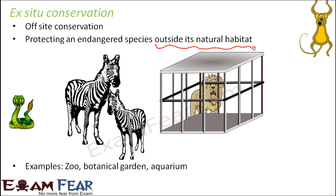This is off-site conservation. Botanical gardens are another example — like Lal Bagh in Bangalore, where you see huge varieties of plants and many different plant species are conserved and taken proper care of. Basically, any place that is not the natural habitat but is a man-made region made suitable for conservation of plant and animal species is ex-situ conservation.